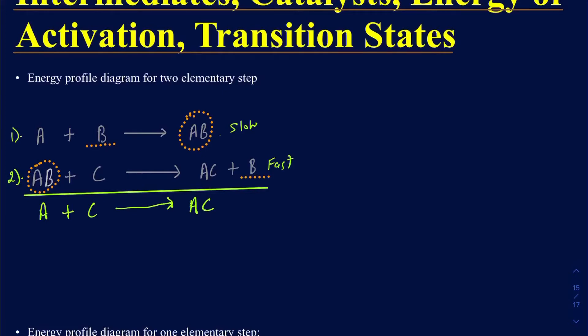Now let's figure out what AB and B are. If you use something in the first step and then it gets produced back in the last step, that particular chemical is considered a catalyst. In this case, B gets used but then gets produced at the end, so B is your catalyst. AB, on the other hand, gets produced in one step but then gets used right away in the next step — that's your intermediate.